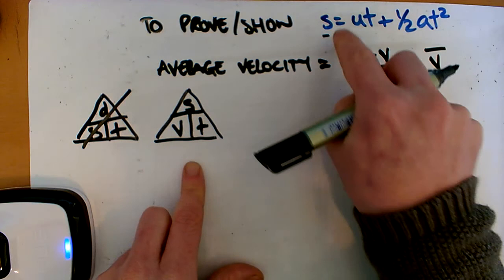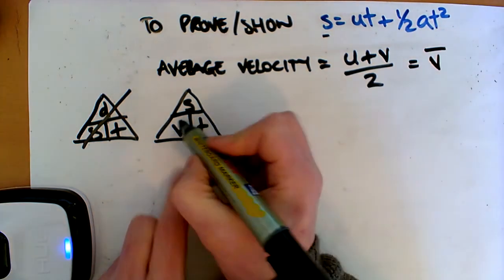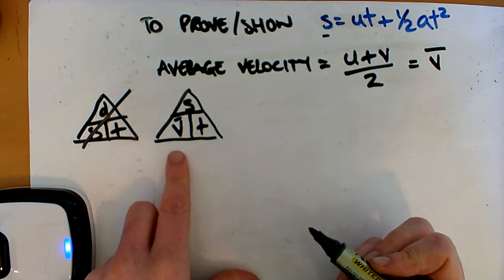Okay? And this is what we want. So we want this S. So we know. Should have put a little bar in there because that's your average velocity.